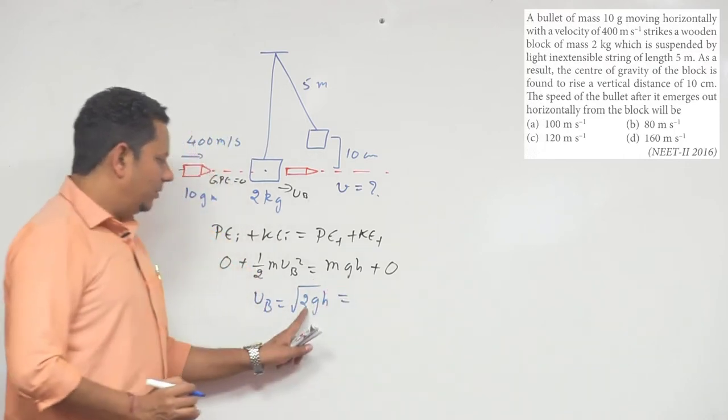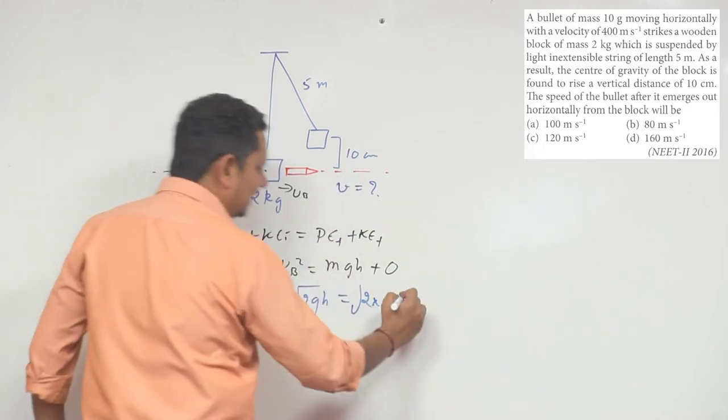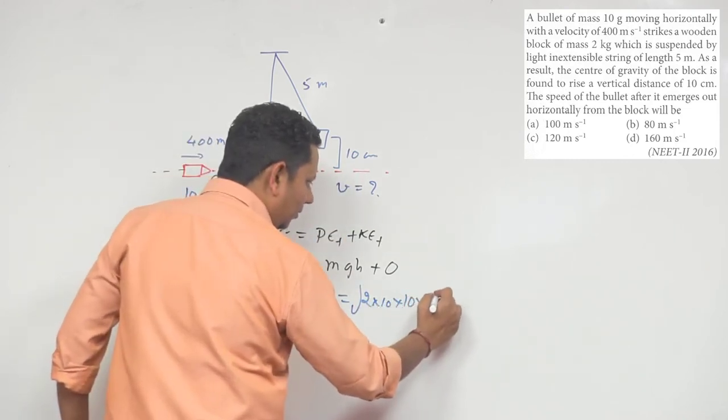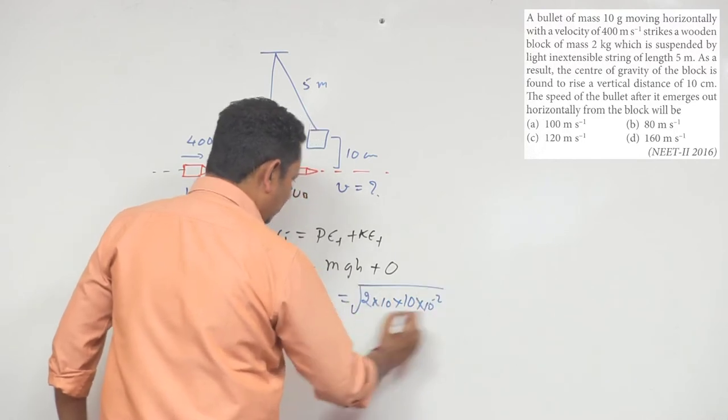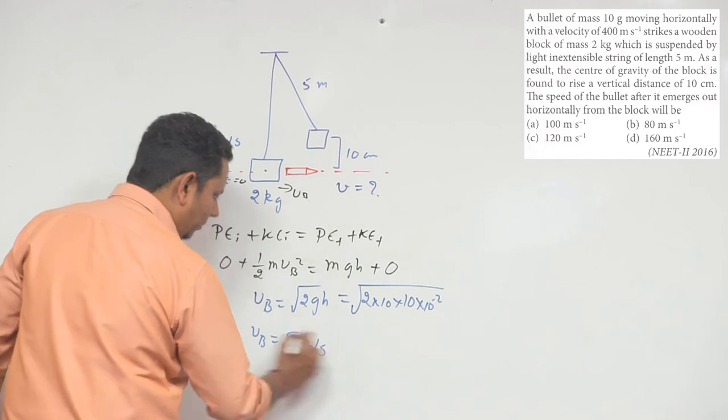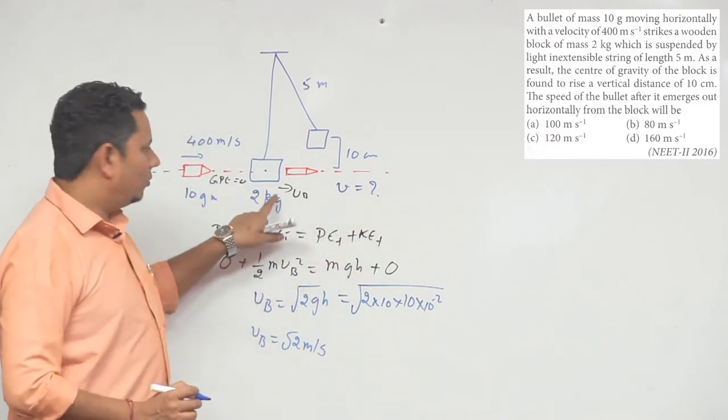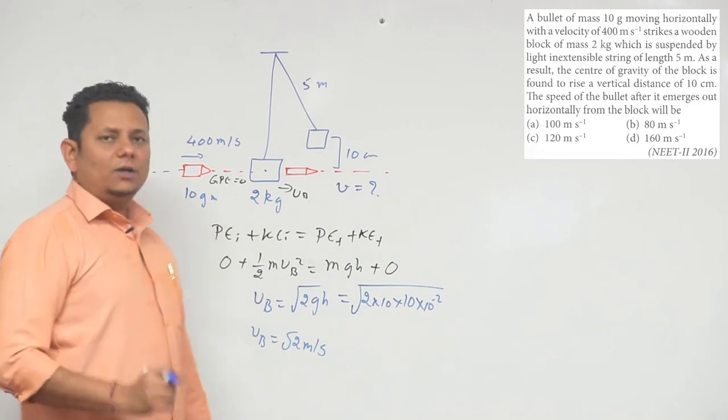If we substitute the values, this becomes 2 multiplied by 10 multiplied by 10 centimeters, which is 10 times 10 to the power minus 2. Solving this, the velocity of block comes out to be square root 2 meters per second. So just after the bullet exits, the block's velocity is root 2 meters per second.